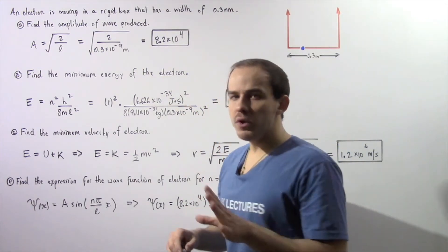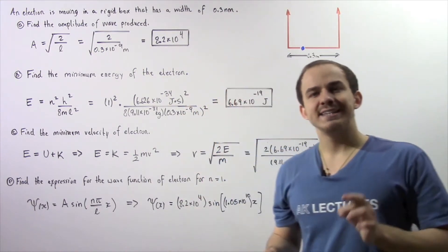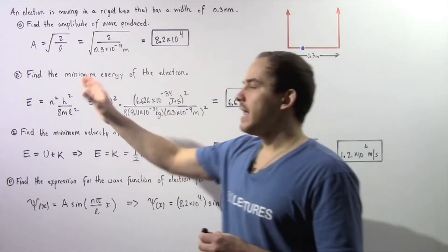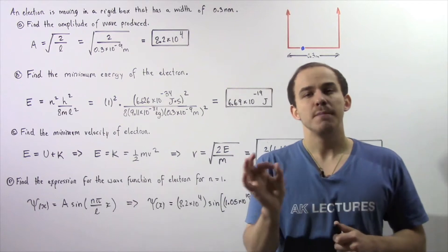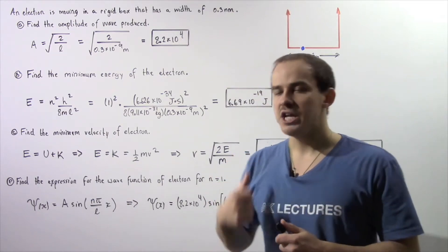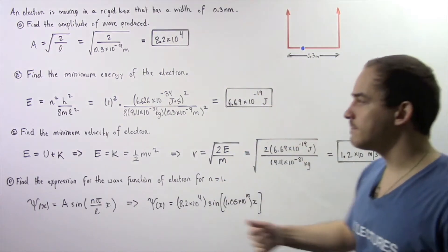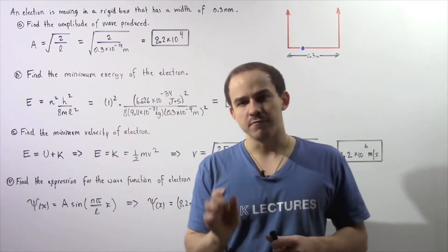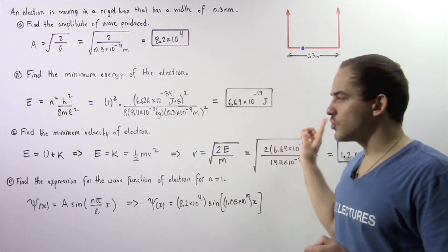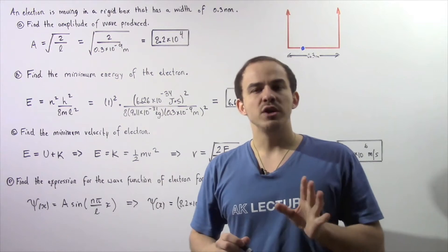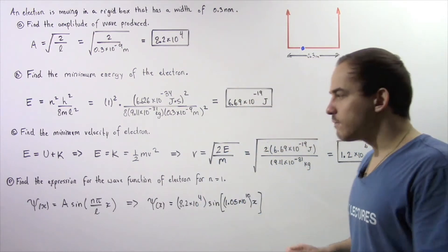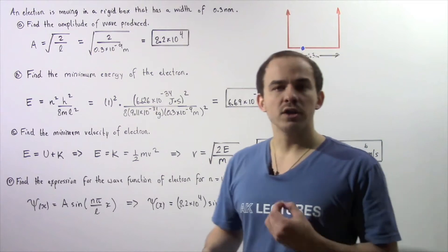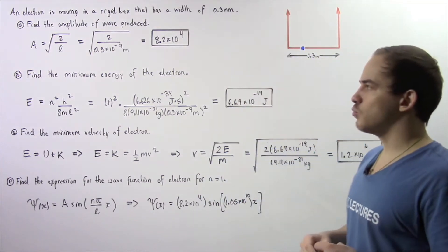In part A we want to find the amplitude of the wave produced by the electron. In part B we want to find the minimum quantum of energy that our electron could have. In part C we want to find the minimum velocity of that electron, and finally in part D we want to find the expression for the wave function of our electron for quantum number n equals 1.